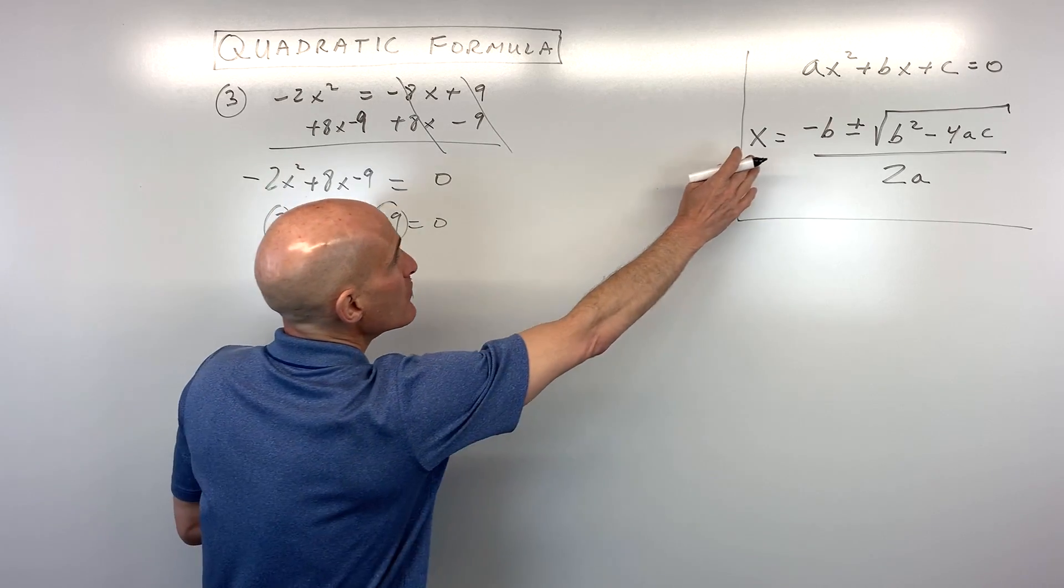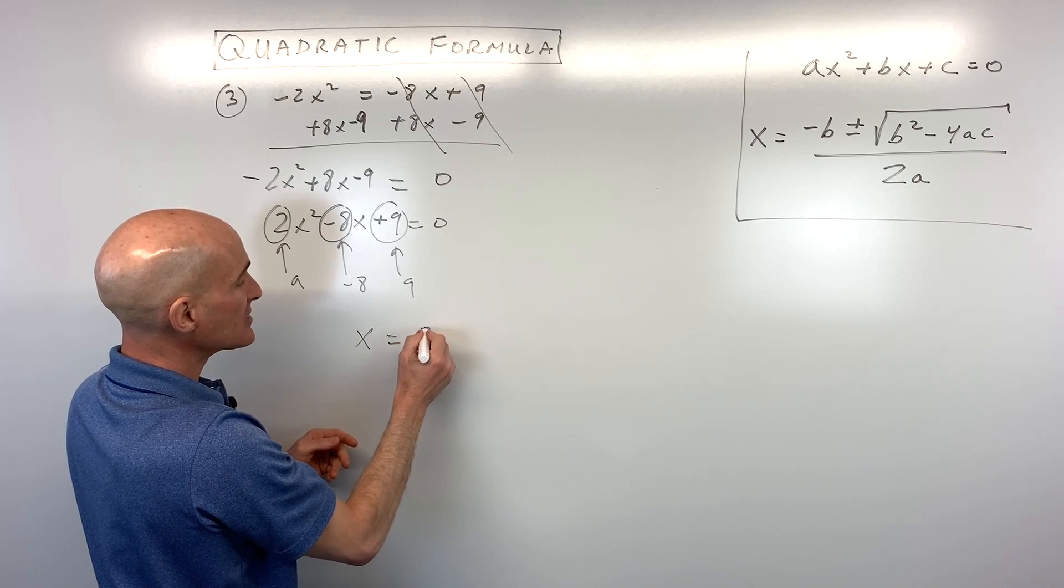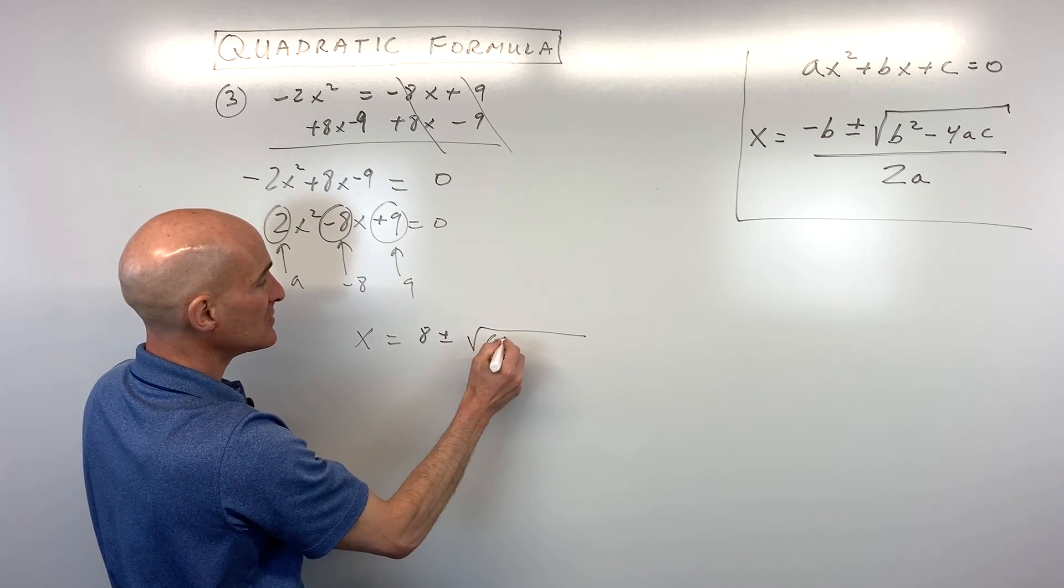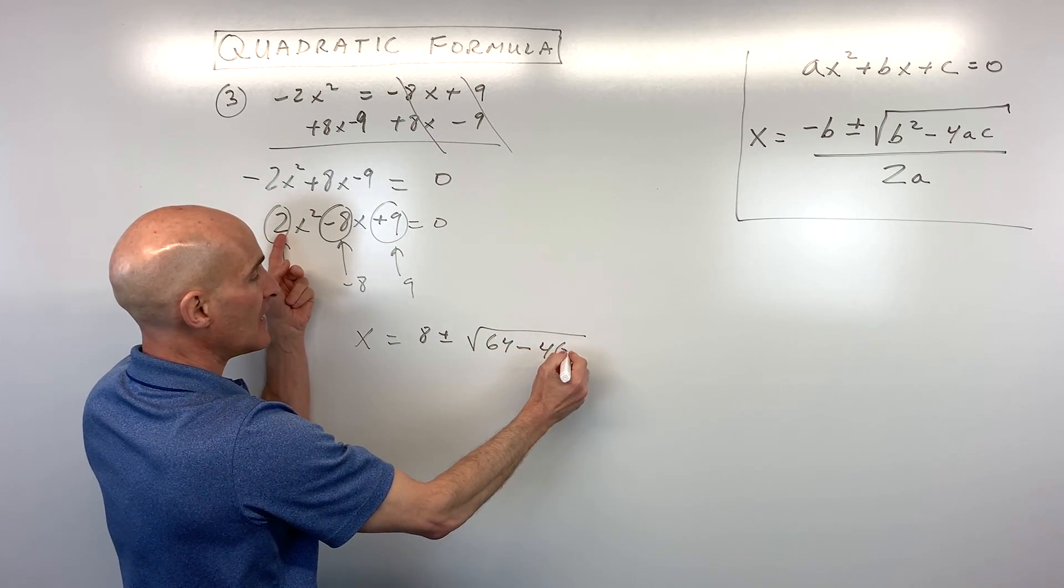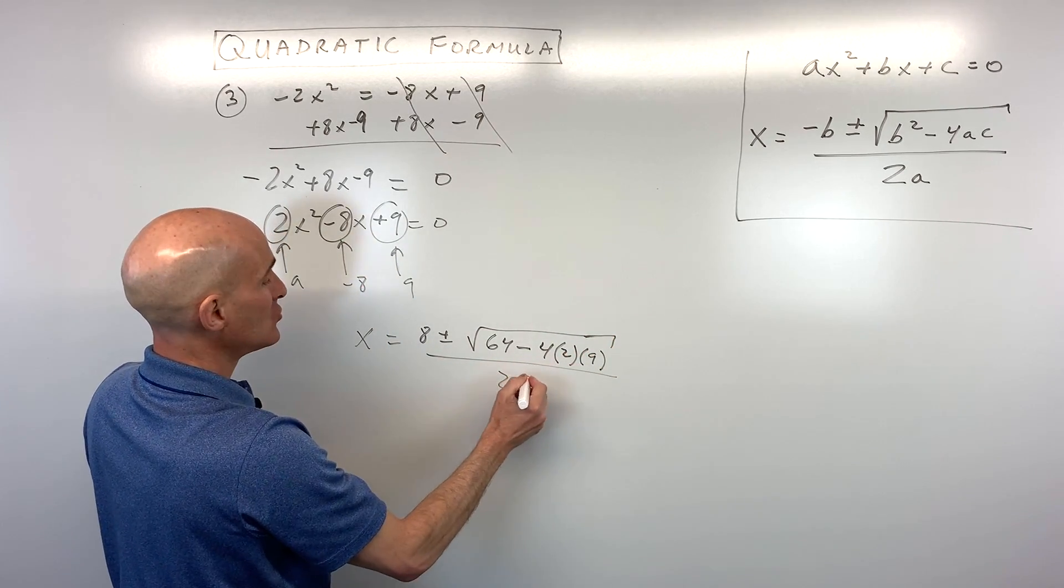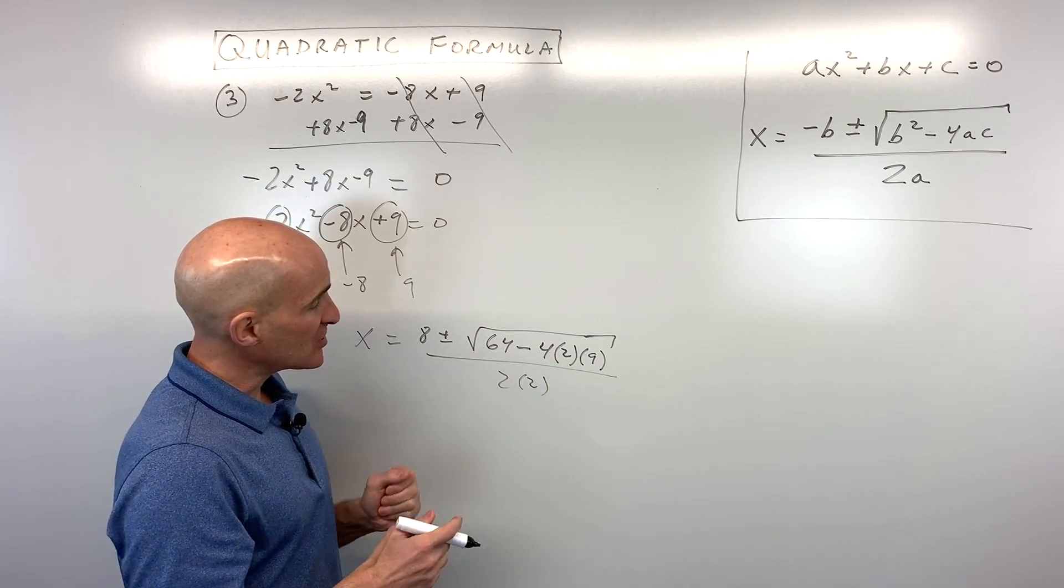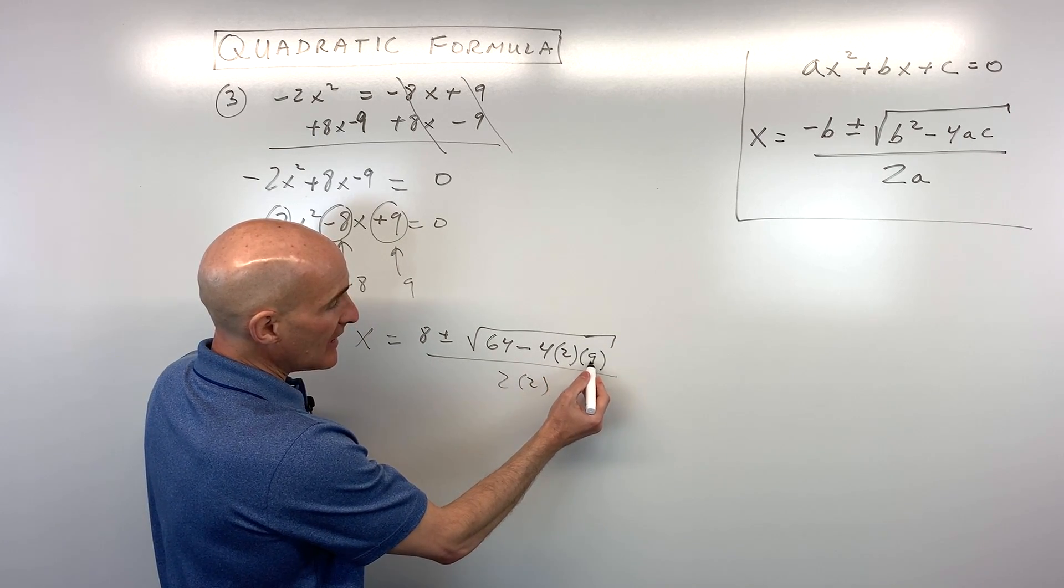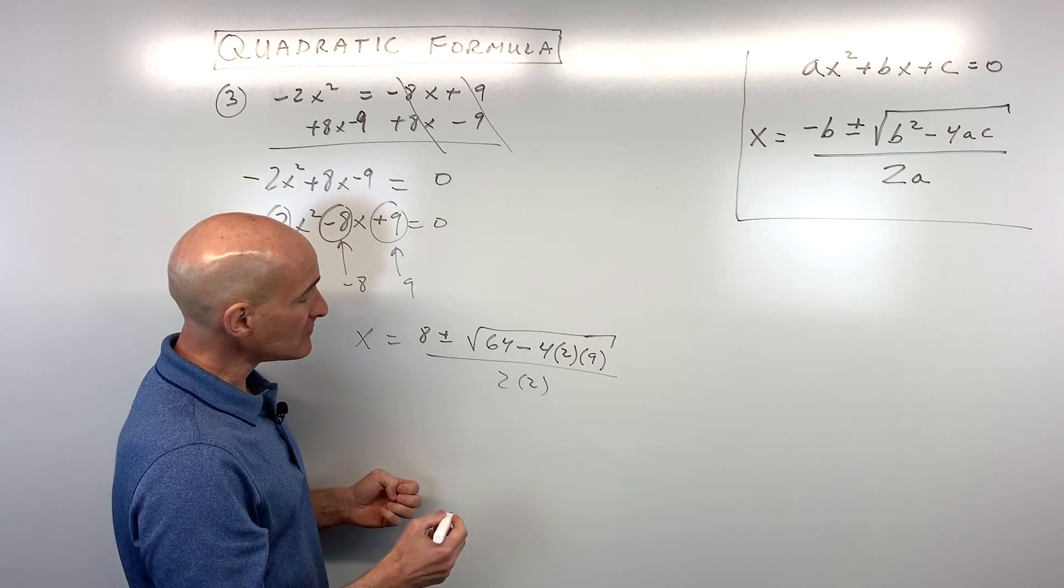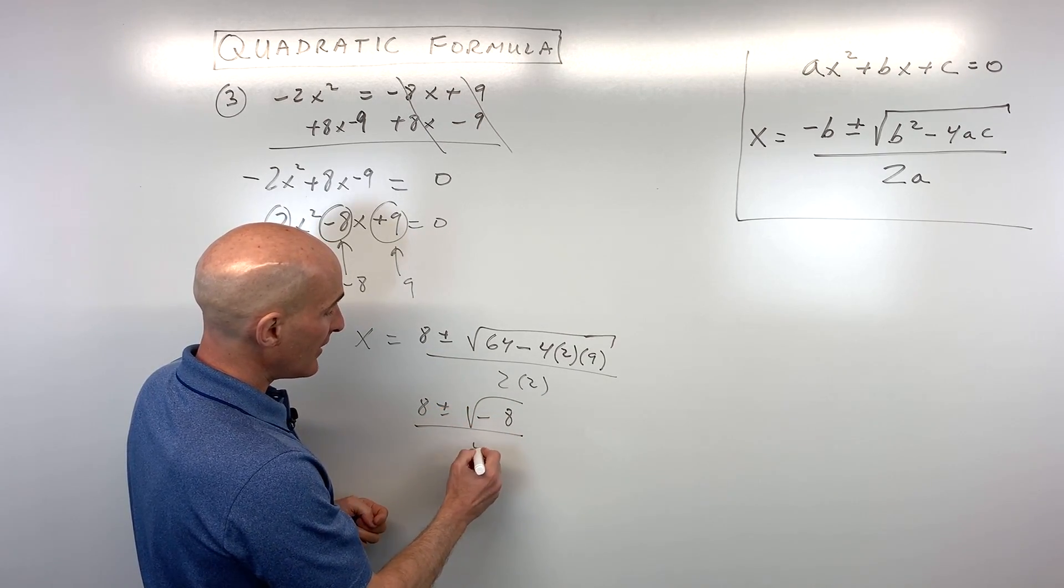Let's go ahead and put it into the quadratic formula. We have x equals the opposite of b. So the opposite of negative 8 is positive 8 plus or minus the square root of b squared. So that's negative 8 times negative 8, which is 64, minus 4 times a, which is 2, times c, which is 9, all divided by 2 times a, which is 2. Now, I like to start from the inside and work my way out. So I start with what's underneath the square root. 4 times 2 is 8. 8 times 9 is 72. 64 minus 72 is negative 8. And we have 8 plus or minus the square root of negative 8 all over 4.